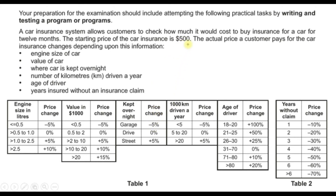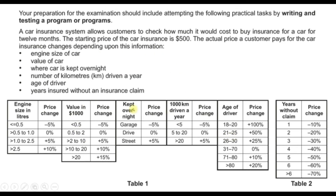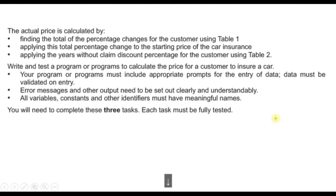Then, applying this total percentage change to the starting price of car insurance, which is 500, we calculate the price change — find the total and multiply it by the starting price. The third point is applying the years-without-claims discount percentage using Table 2. After finding the insurance price from Table 1, that value should also be multiplied by the price change according to the number of years the driver achieved without any claim.